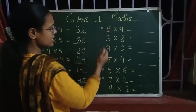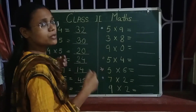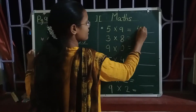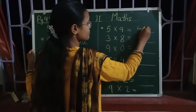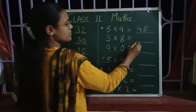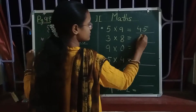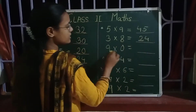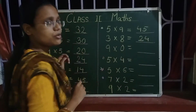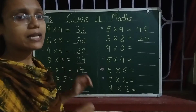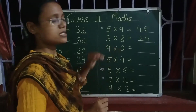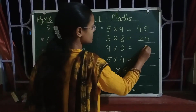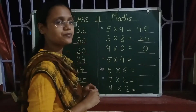Let us see why this whole thing is given. 5 nines are 45. 8 threes are 24. 9 into 0 — when any number is multiplied by 0, the answer is 0.